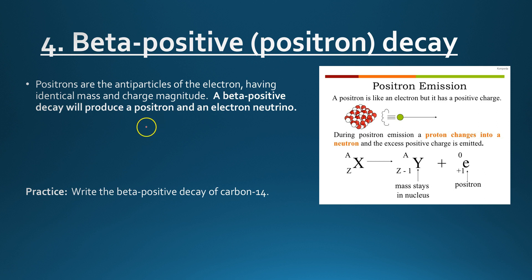One that we will see in the homework for today is the beta positive decay, also called a positron emission. So positrons are the exact same things as electrons, except instead of having that negative one charge, like an electron does, it has a positive one charge. So the only difference, the mass is the same, the spin and some of the other characteristics are the same. The only thing that's different is the charge is positive instead of negative. So that's a positron. It's going to produce a positron with beta positive decay, and you're going to get an electron neutrino.